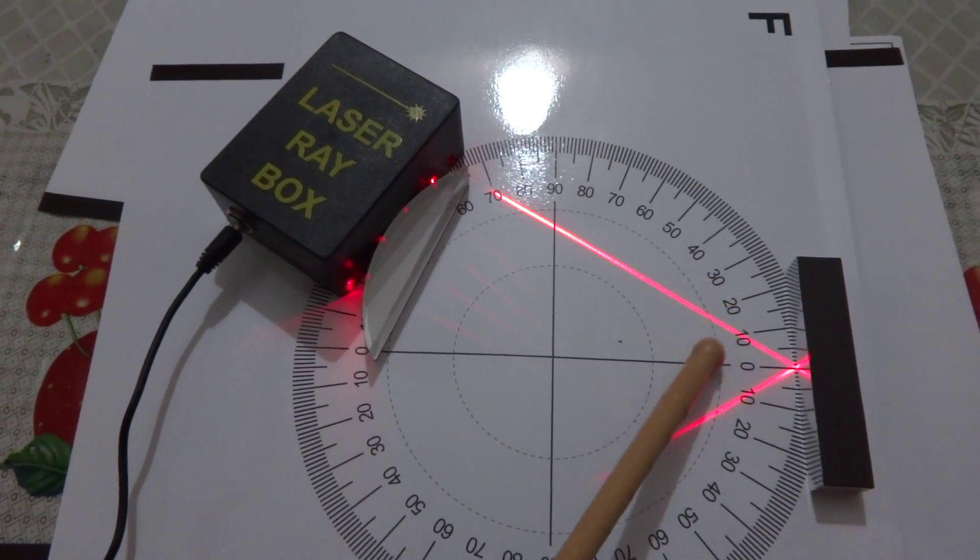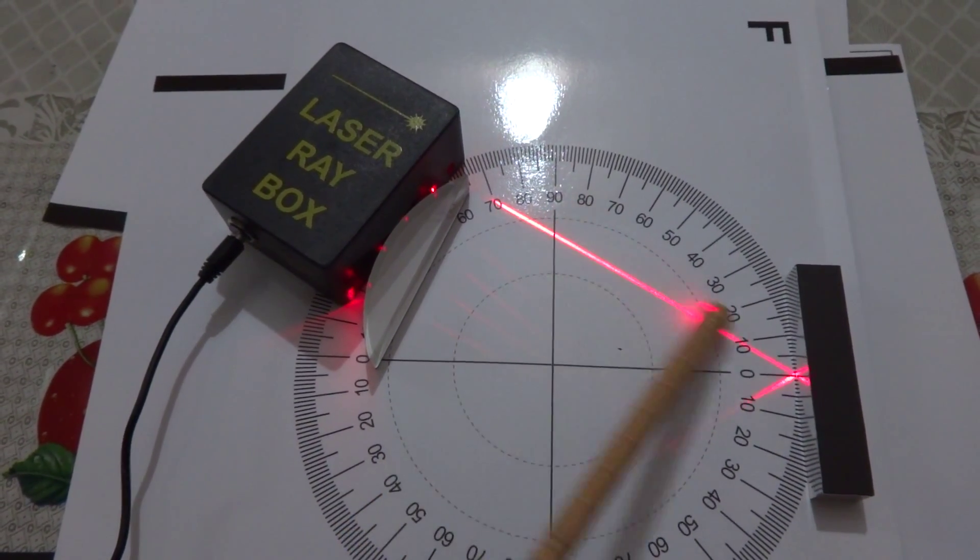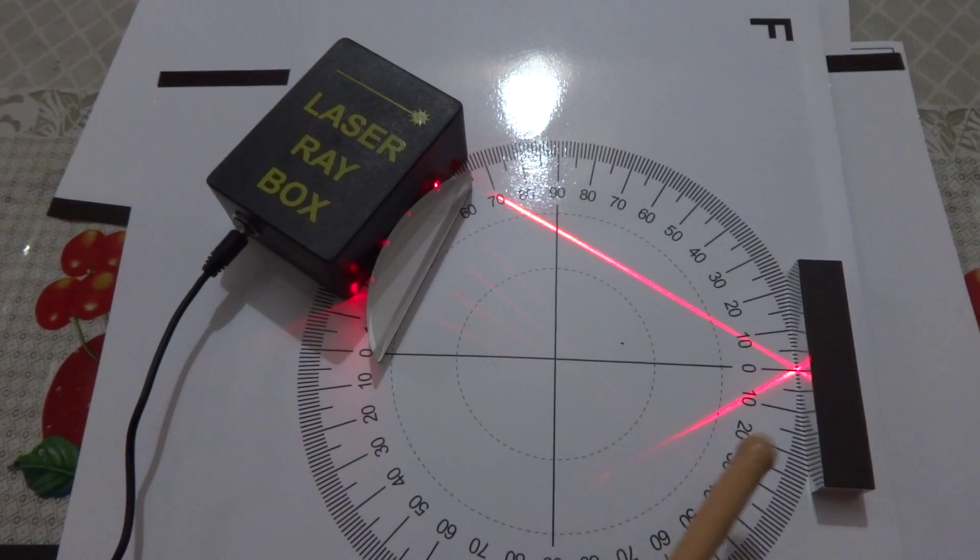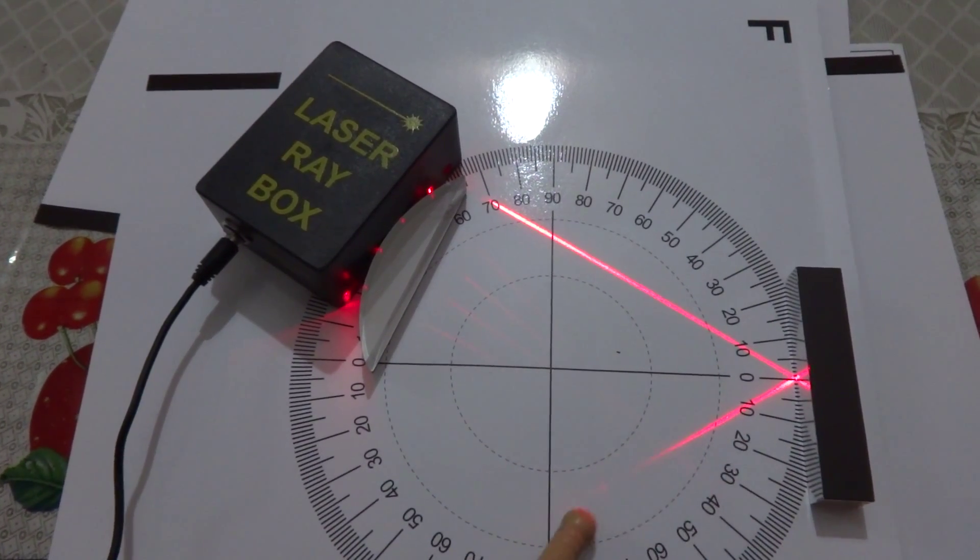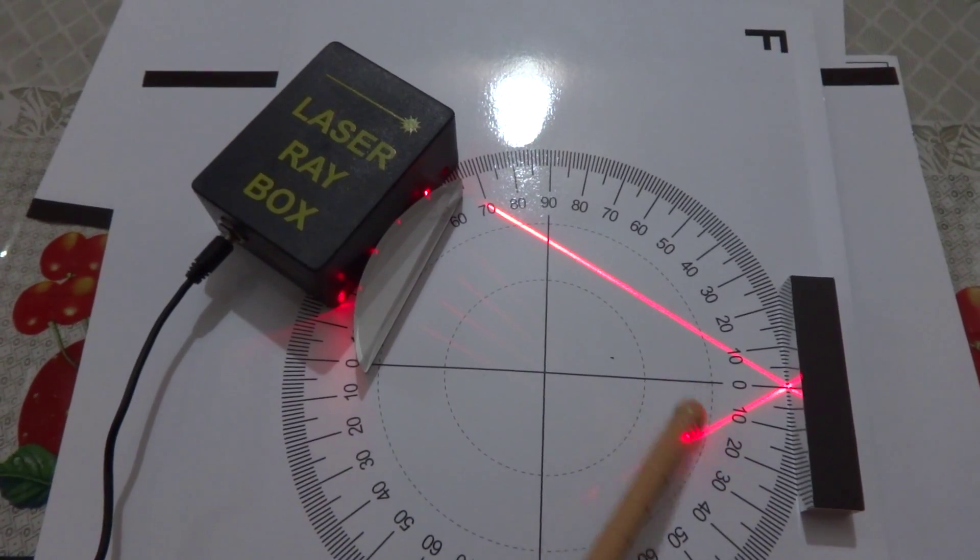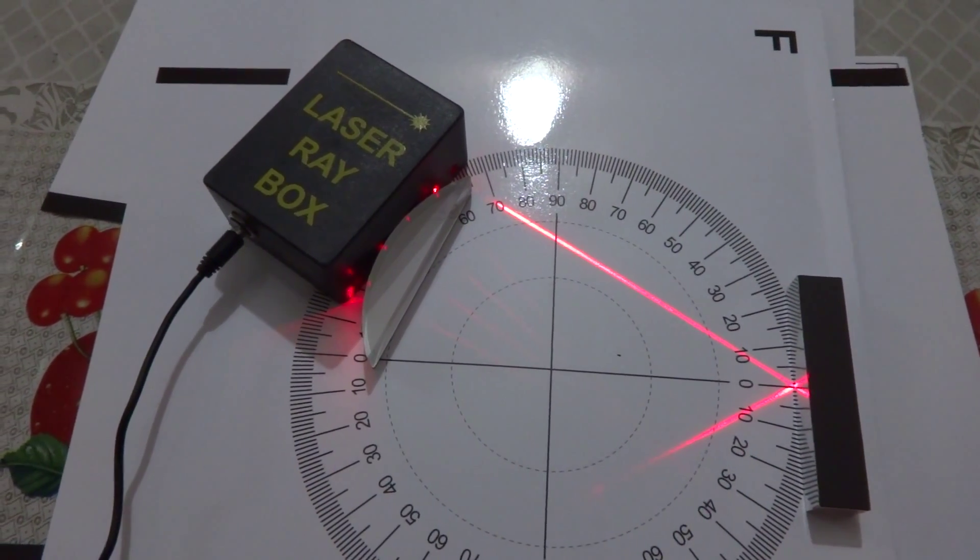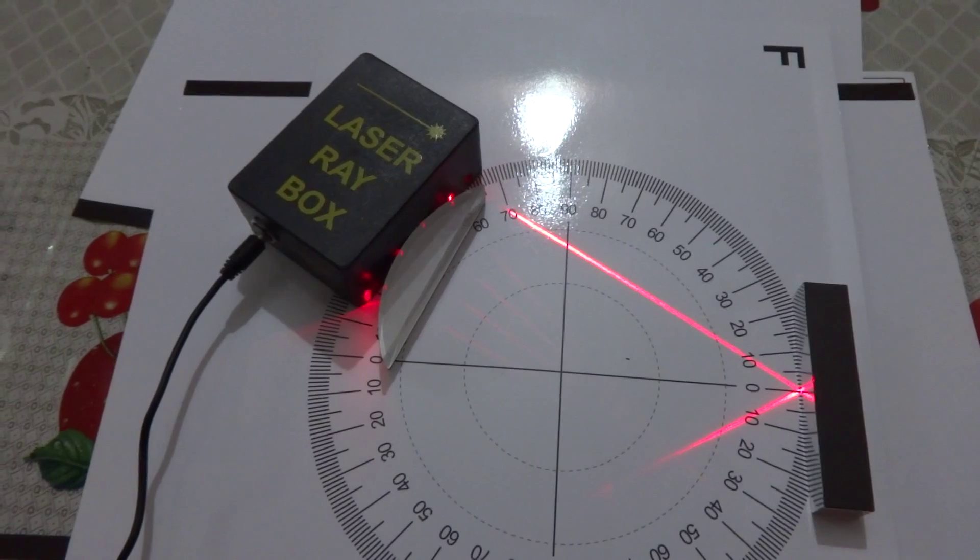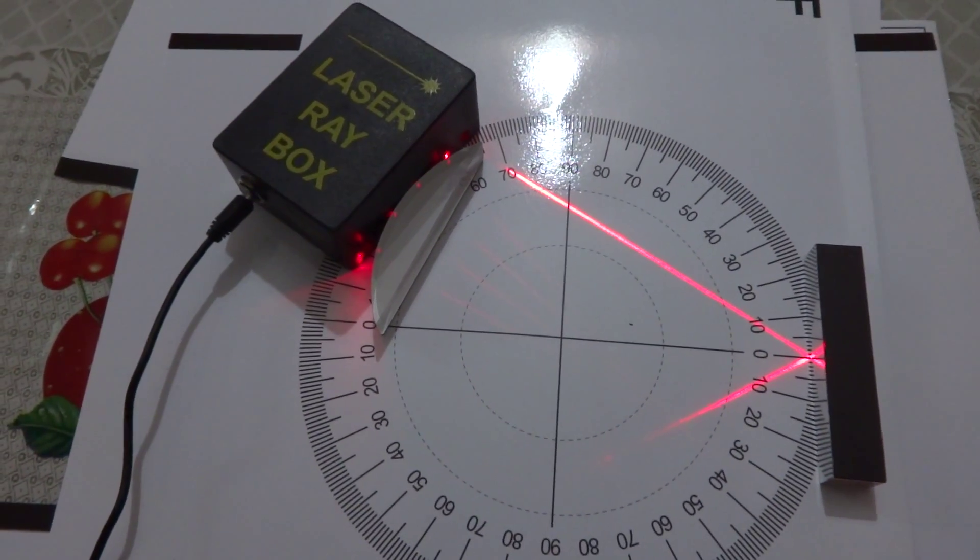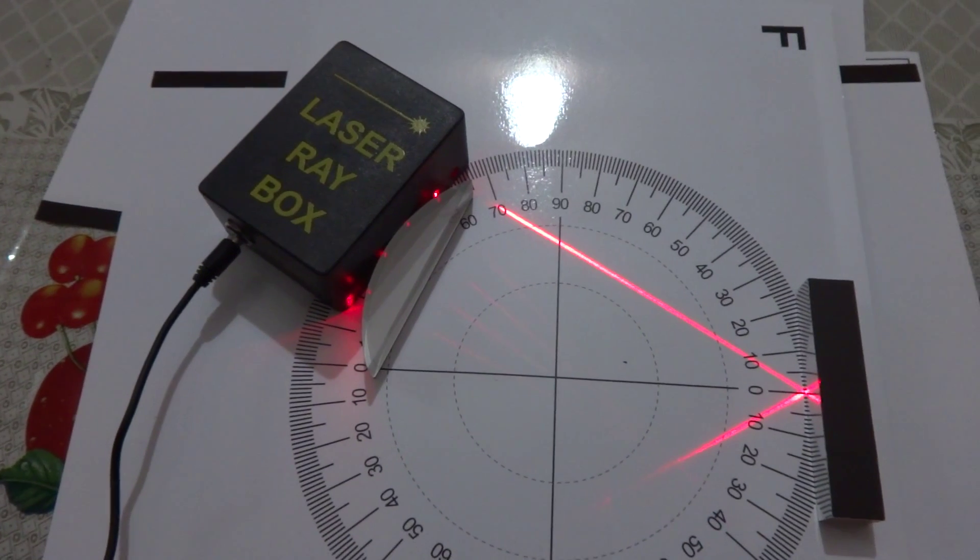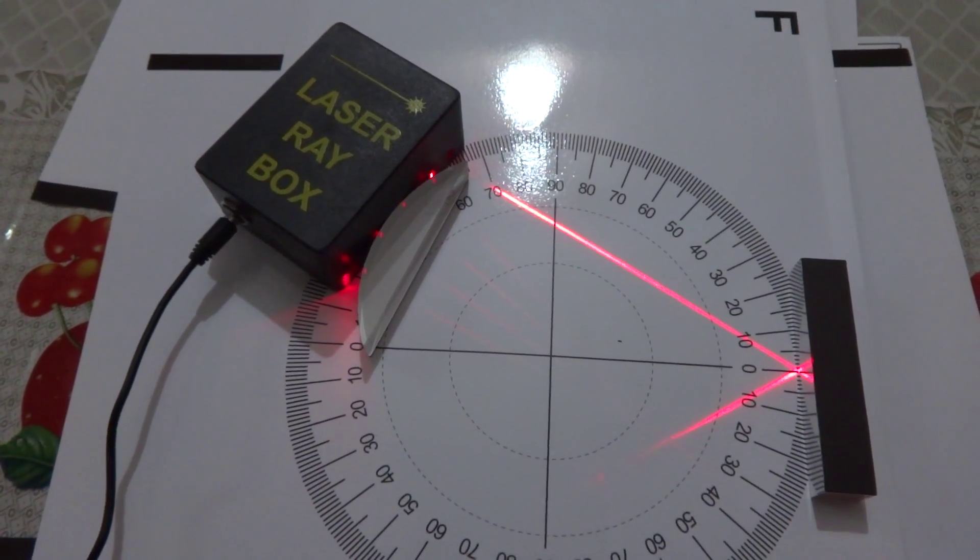whatever the angle that is formed between the normal and the incident ray is equal to the angle between the reflected ray and the normal. This is one of the laws of reflection. These laws of reflection are also valid for spherical mirrors.